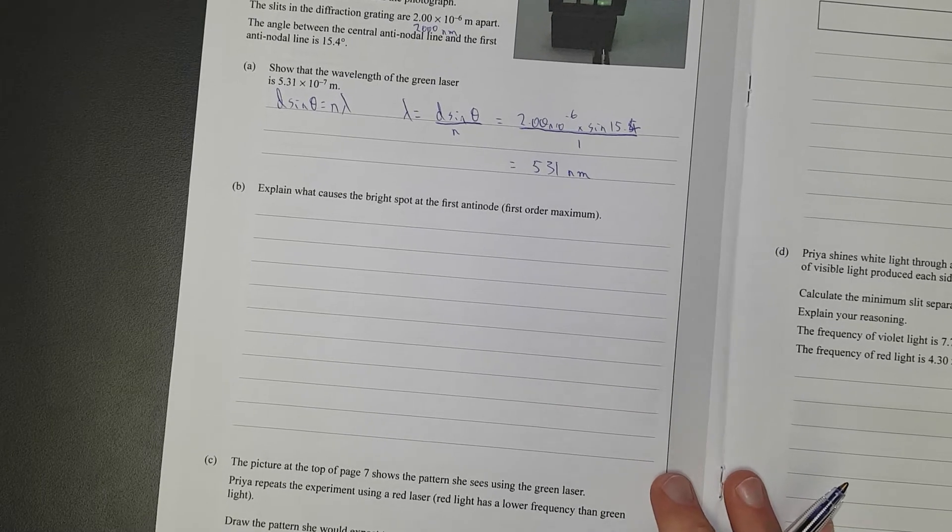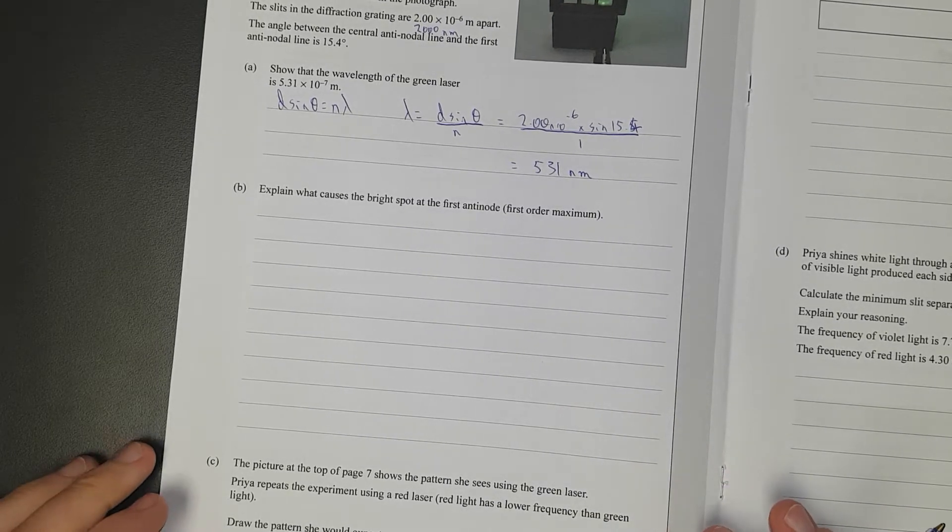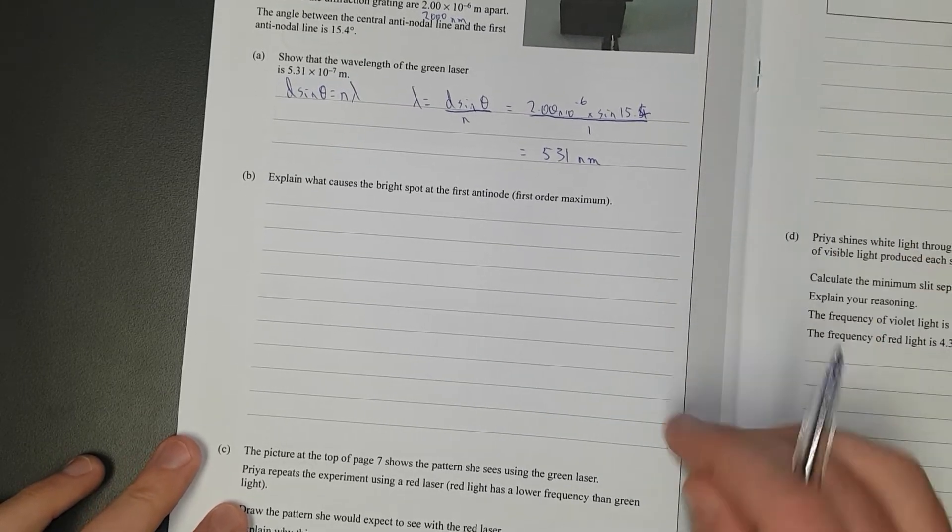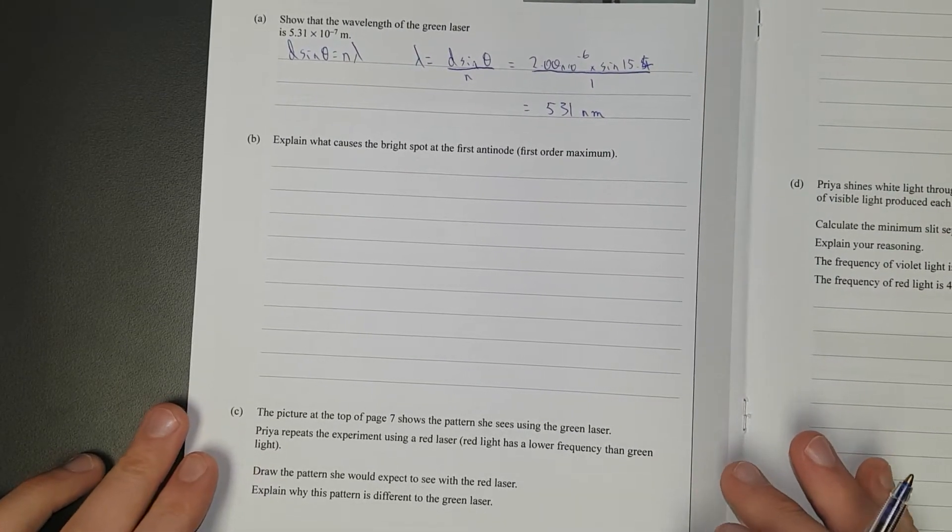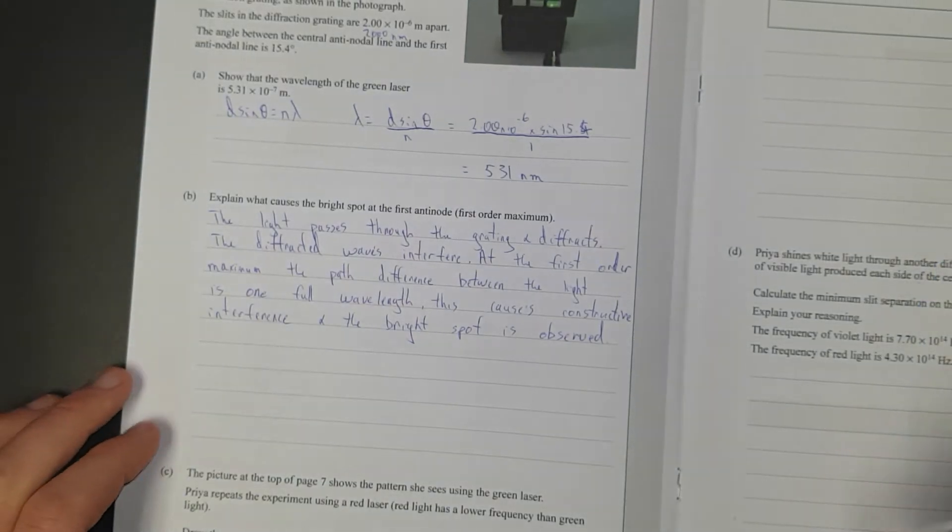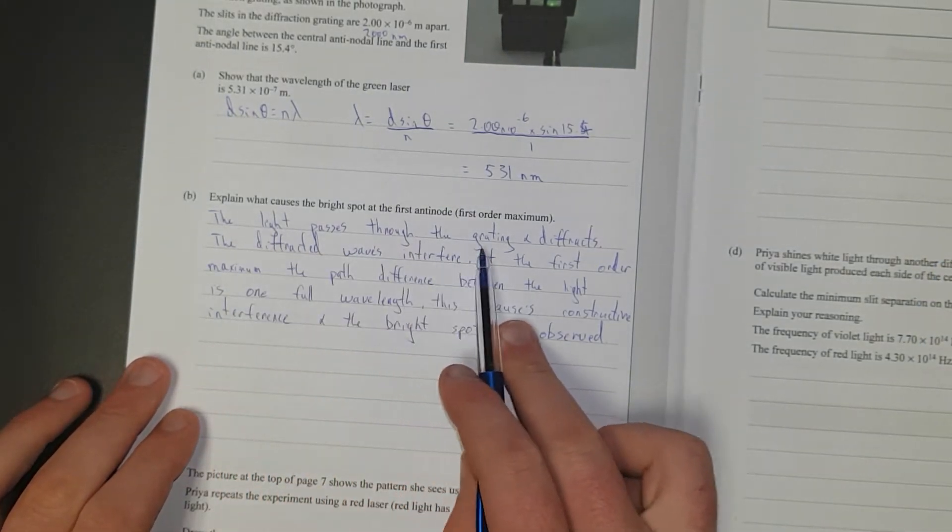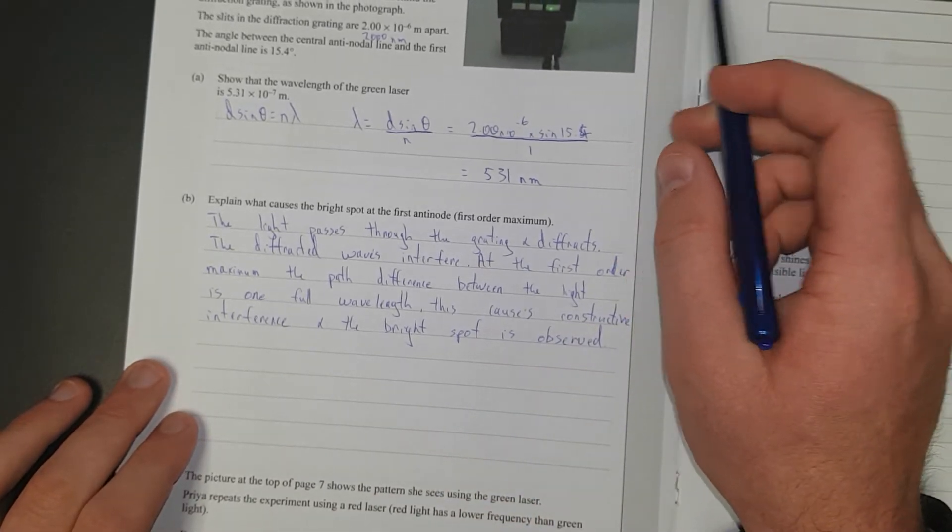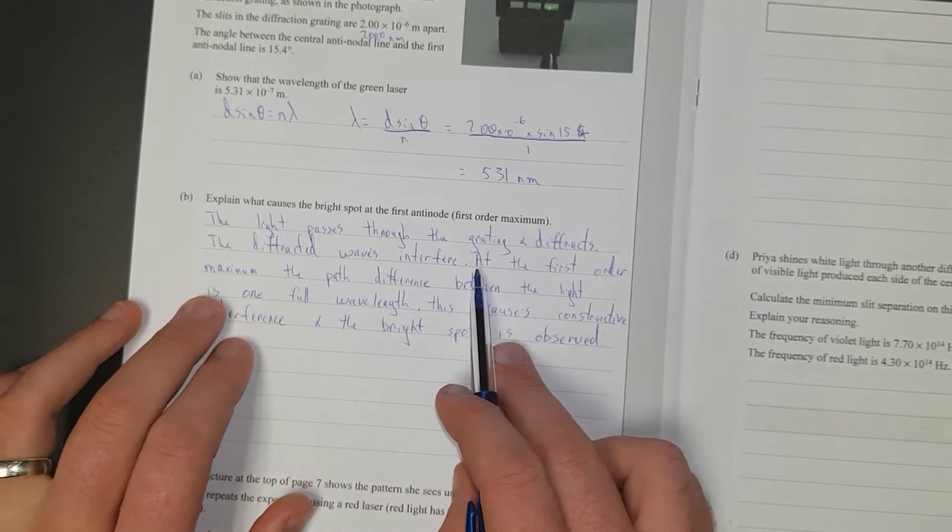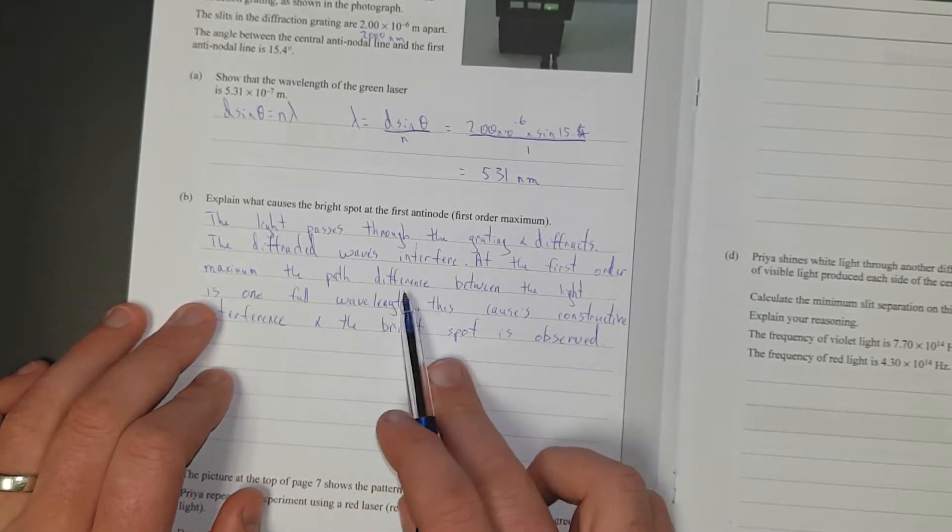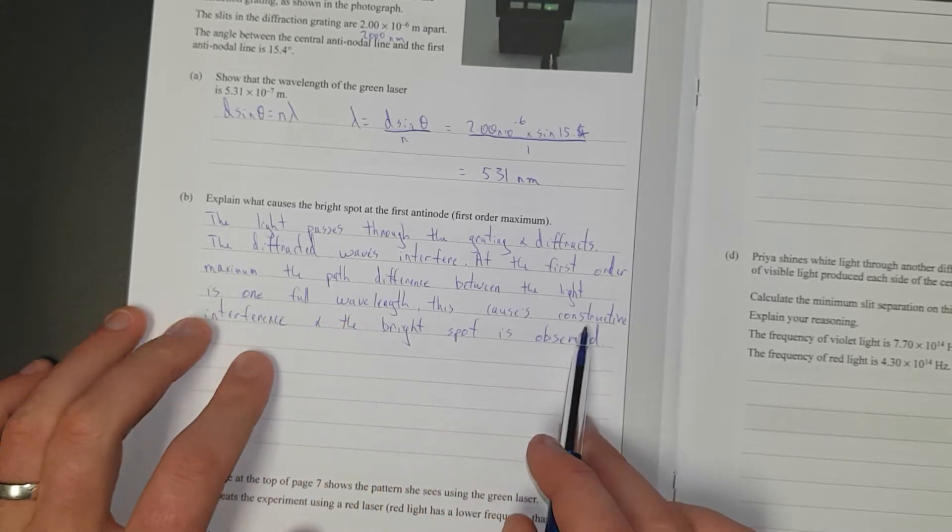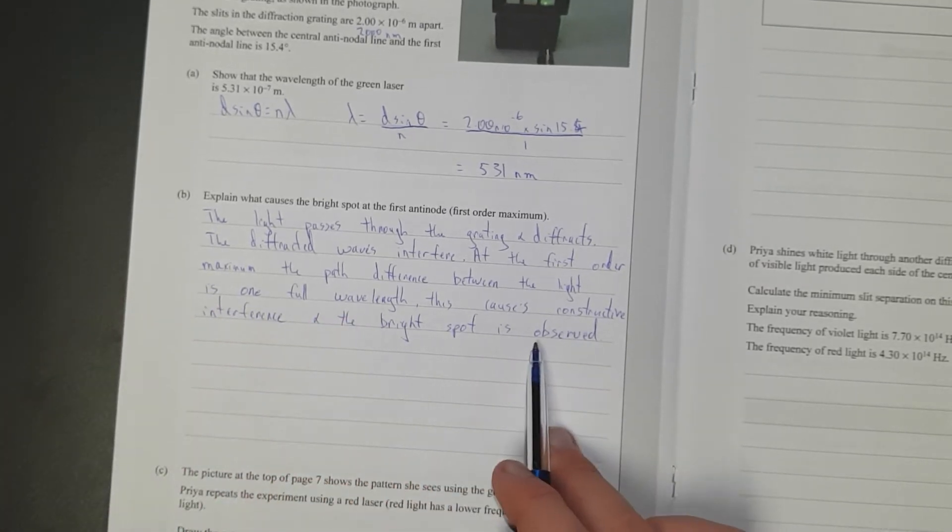Explain what causes the bright spot at the first antinode, in other words the first order maximum. So I'm going to pause the video, write the answer, and then go through it. I've said the light passes through the grating and diffracts. The diffracted waves interfere. At the first order maximum, the path difference between the light is one full wavelength. This causes constructive interference, and the bright spot is observed.